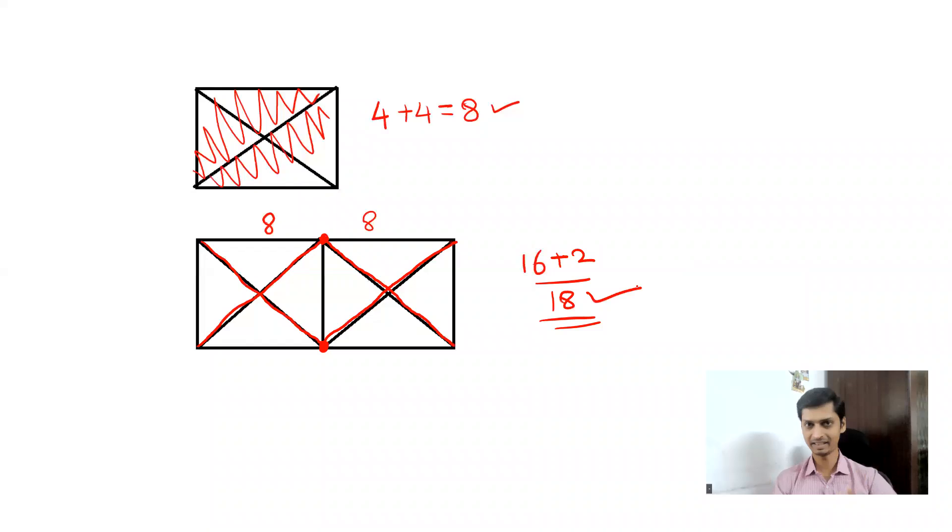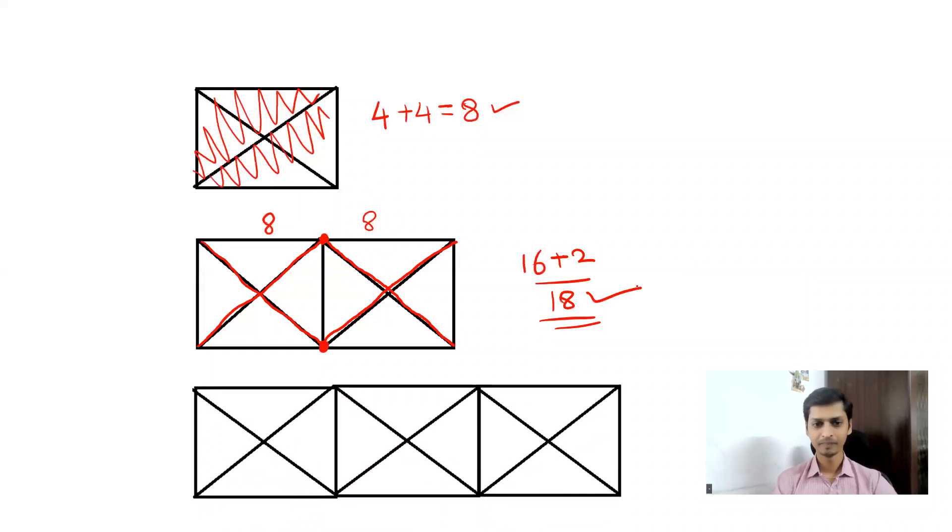The answer for this question is 18. Now see, you have three boxes and you can see how many junctions. At the top you have two junctions and at the bottom you have another two junctions.